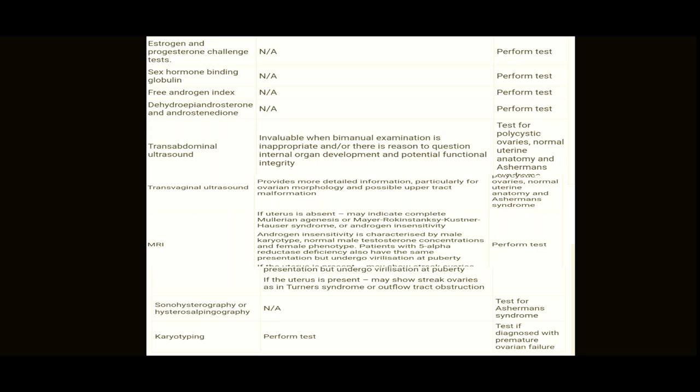Perform transabdominal ultrasound — it gives a lot of information about internal organ development, can identify PCOS in secondary amenorrhea, and can detect Asherman's syndrome. In primary amenorrhea, it can identify problems with reproductive system development. Perform transvaginal ultrasound only if required and with consent, as patients with primary amenorrhea may still have an intact hymen. Check if the uterus is absent in primary amenorrhea — this is more suggestive of MRKH or androgen insensitivity syndrome.